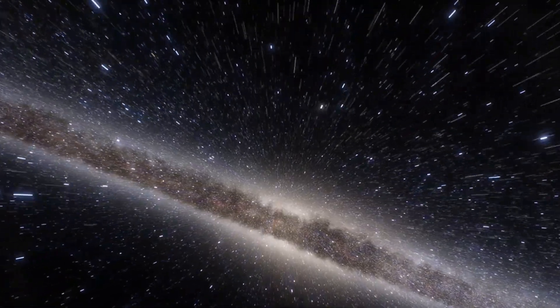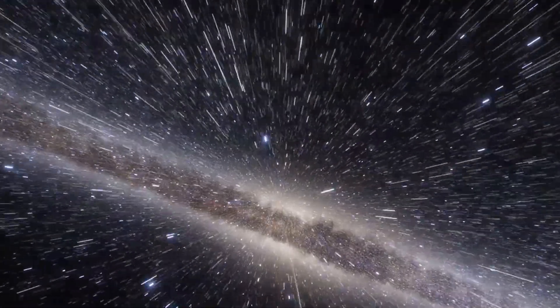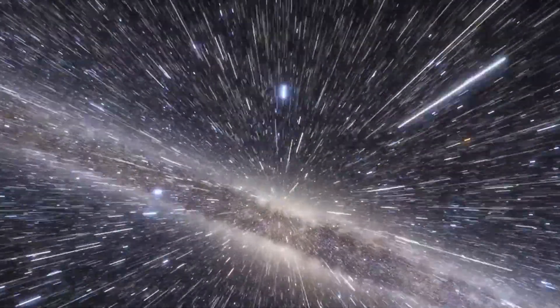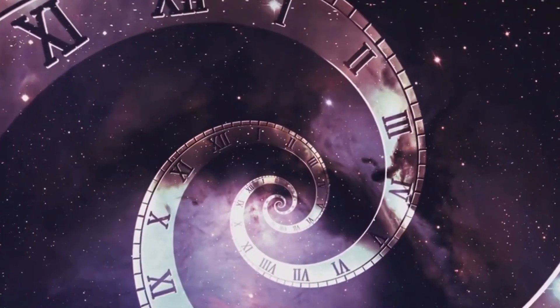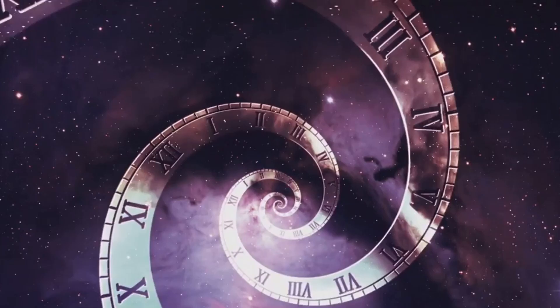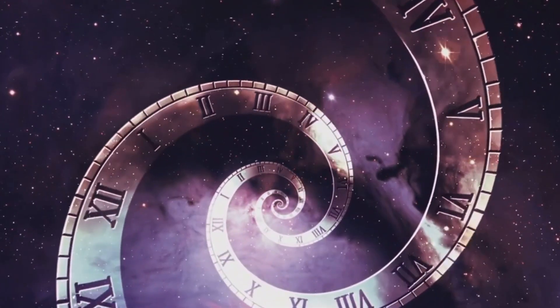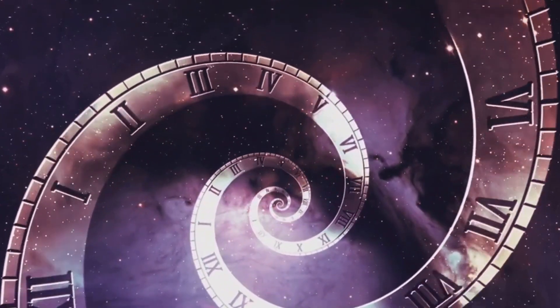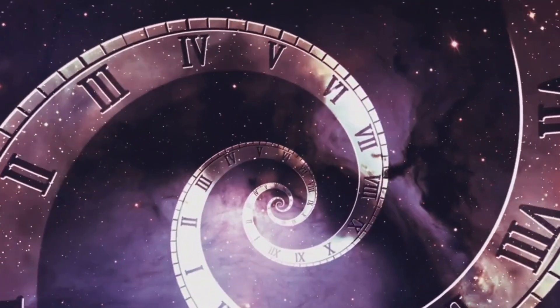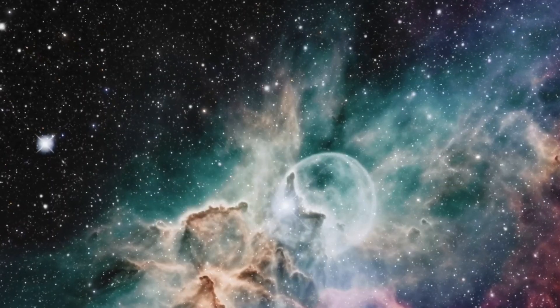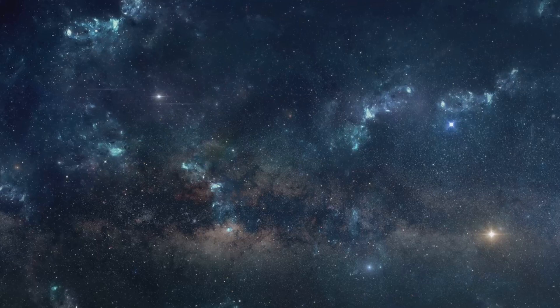To sum it up, the observable universe is like a cosmic time machine, a spherical window through which we can view the distant past. It's mind-bogglingly vast, encompassing countless galaxies, stars, and planets. Yet, as grand as it may seem, our observable universe is just a tiny fraction of the whole universe. How much more is out there beyond what we can see? That's a question for another time. But for now, let's marvel at the immensity of what we can observe.